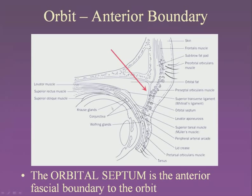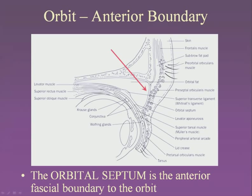Looking at another parasagittal view: here's the frontal bone, forehead, eyebrow, eyelid, and the eye. The anterior boundary of the orbit is the orbital septum — a very important structure. It is comprised of the periosteum of the orbital bone, which bridges across to the tendinous structure on the levator muscle. The levator muscle is what raises and lowers the eyelid, so this periosteal bridge is the definitive layer separating the outside from the inside of the orbit.